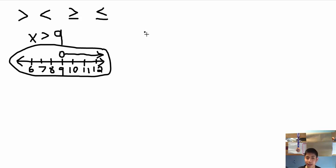Now if we have x is greater than or equal to 9. This is a little bit different because instead of just a circle we draw a circle but then we fill it in. So it's completely filled and since it is greater than 9 we draw in the right direction as well.